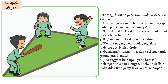1. Lakukan gerakan melempar dan menangkap bola seperti gambar sebelumnya. 2. Setelah mahir, lakukan gerakan permainan bola kasti secara berkelompok. 3. Bagi temanmu ke dalam dua kelompok. 4. Tentukan kelompok yang akan melempar terlebih dahulu. 5. Gunakan hitungan 1, 2, dan 3 sebagai tanda permainan dimulai. 6. Jika anggota kelompok yang berhasil melempar bola dan mengenai kelompok lain, maka dilakukan pergantian yang melempar.